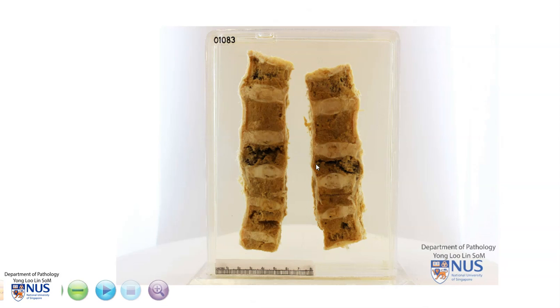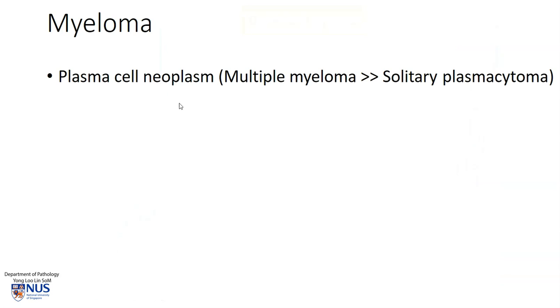This is an example of multiple myeloma, which is a malignant plasma cell neoplasm involving the vertebral bodies. Myeloma is a neoplasm of the plasma cells, and it can occur as multiple masses, usually in the axial skeleton — this is known as multiple myeloma — or less frequently as a single mass, which is known as a solitary plasmacytoma. Solitary plasmacytomas can progress to multiple myeloma.